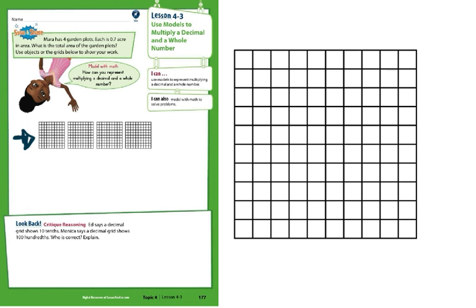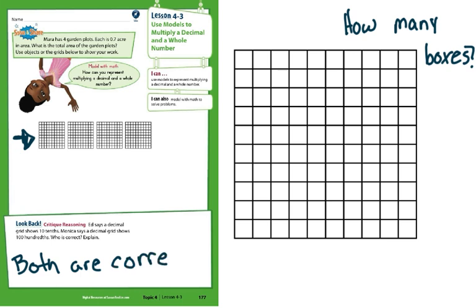Do you guys know how many boxes there are in here? And it is in the name of it. It is a hundreds section right here. So there are a hundred boxes. So both are correct. They just decided to explain it in different ways.